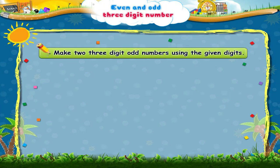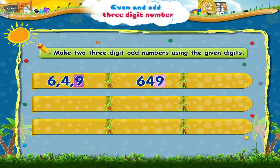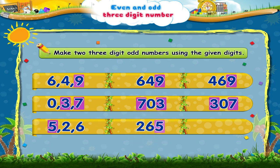Now, let us make two three-digit odd numbers using the given digits. The odd numbers made by using 6, 4, 9 are 649 and 469. The odd numbers made by using 0, 3, 7 are 703 and 307. The odd numbers made by using 5, 2, 6 are 265 and 625.